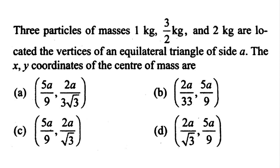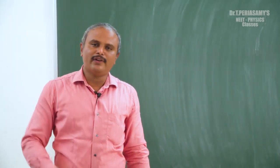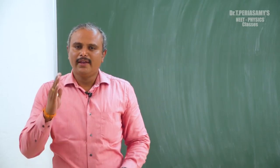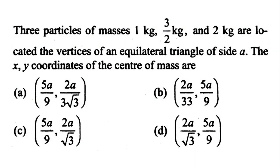There are three particles: one particle has mass 1 kg, another 3/2 kg, and another 2 kg, located at the equilateral triangle vertices. Now we will look at the answer choices: 5a/9 and 2a/(3√3); 5a/33 and 5a/9; 5a/9 and 2a/√3; 2a/√3 and 5a/9. This is a multiple choice problem.